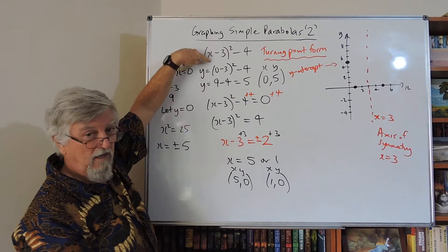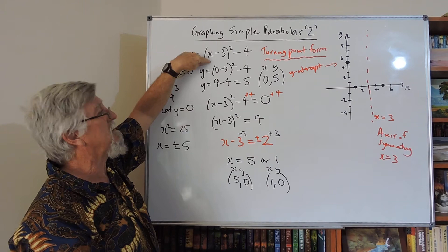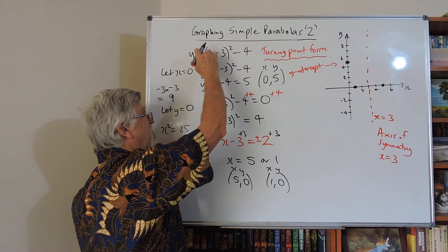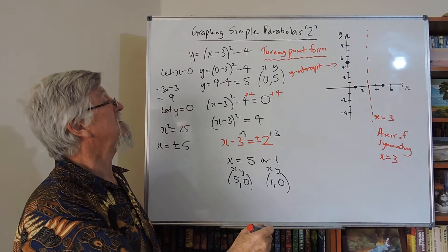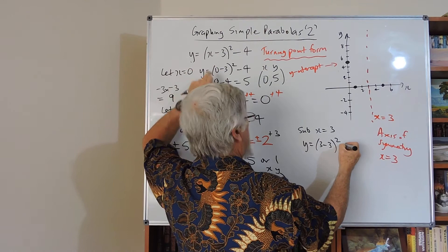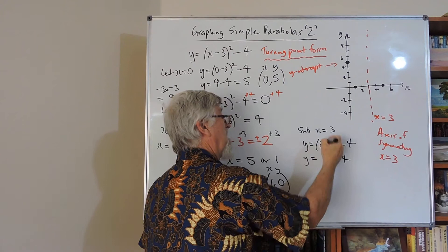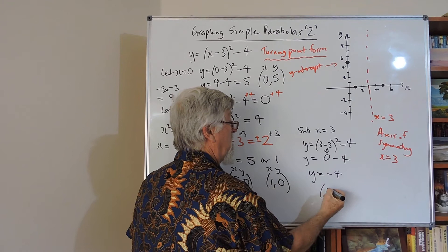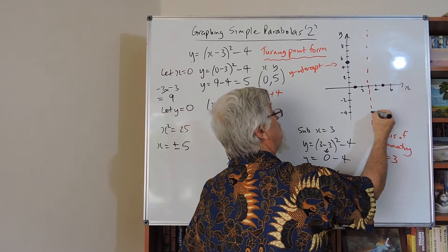If I put 3 into that, I get the smallest value. Just got distracted there for a second. So let's watch what happens here. If I substitute x equals 3, y will equal 3 take 3 squared take 4. And this becomes 0 take 4. As I was saying, that becomes the smallest we can make it, and we get y equals minus 4. So I put in a 3 and I got a minus 4. So over here I've got 3 and minus 4. That's called a minimum.